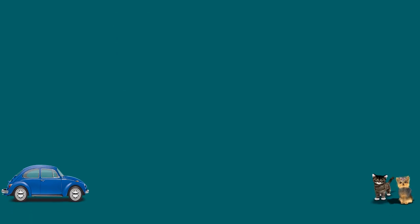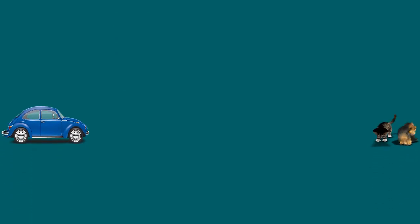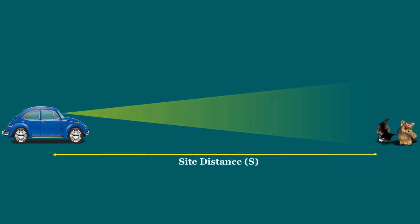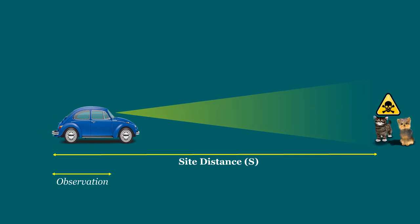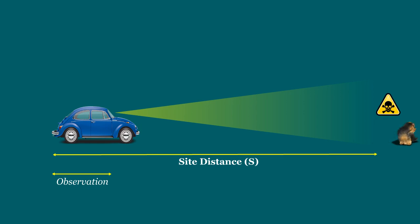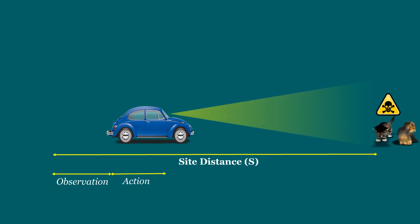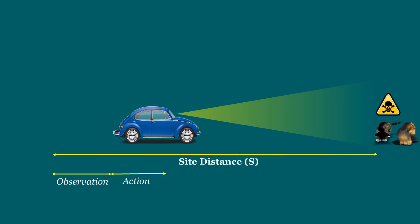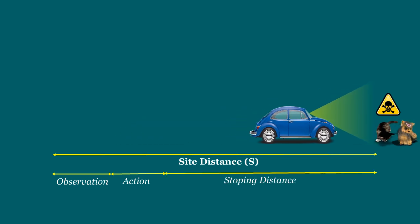In technical definitions, it is defined as: The sight distance S is the length of roadway ahead visible to the driver is the stopping sight distance. This is calculated with due consideration of: 1. The time for driver to perceive the hazard. 2. The time required to react. 3. The time to stop the vehicle after brakes are applied.